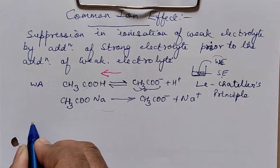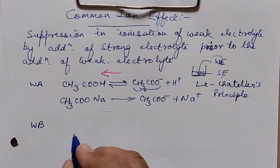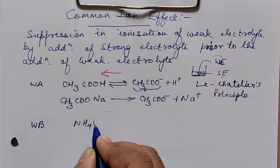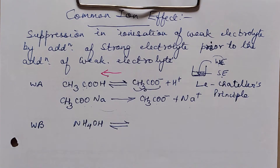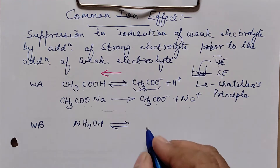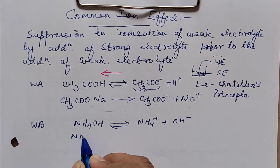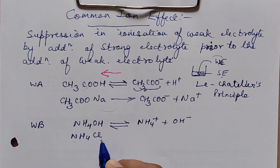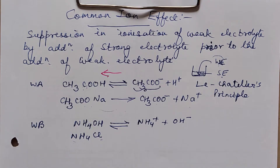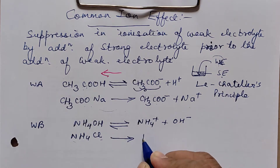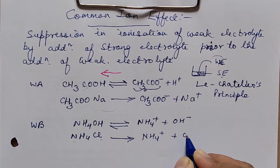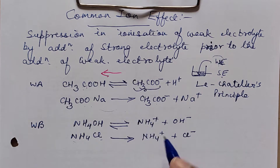Now let's take another example with a weak base. Ammonium hydroxide (NH₄OH) is a weak base and does not ionize completely — it is written with a reversible arrow, forming ammonium ion (NH₄⁺) and OH⁻. Ammonium chloride (NH₄Cl) is a combination of weak base and strong acid (HCl). Since HCl is strong, ammonium chloride is a strong electrolyte and ionizes completely into NH₄⁺ and Cl⁻, increasing the ammonium ion concentration in solution.